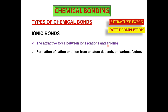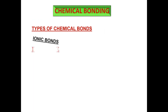The formation of a cation or anion depends on various factors, mainly the completion of the octet. Which atom will preferably lose an electron to form a cation, and which will gain an electron to form an anion? Let's explain this with an example of ionic bond formation.